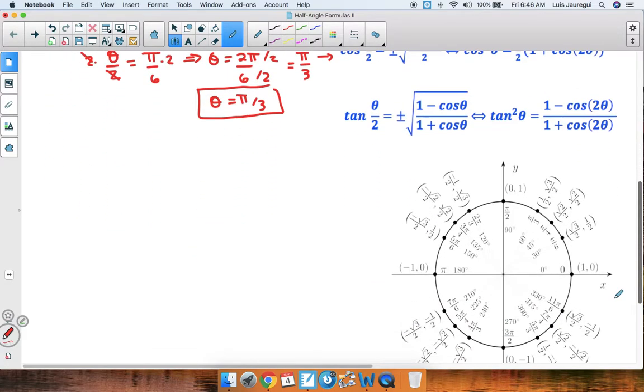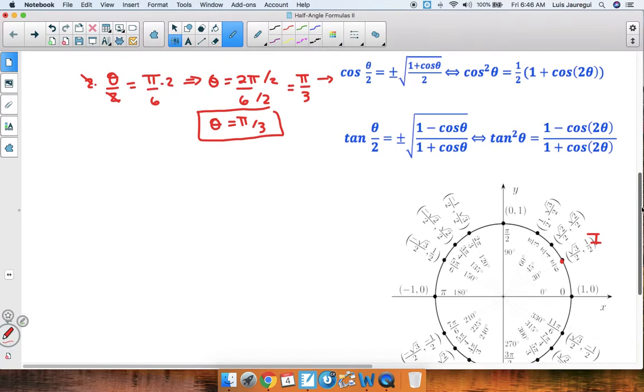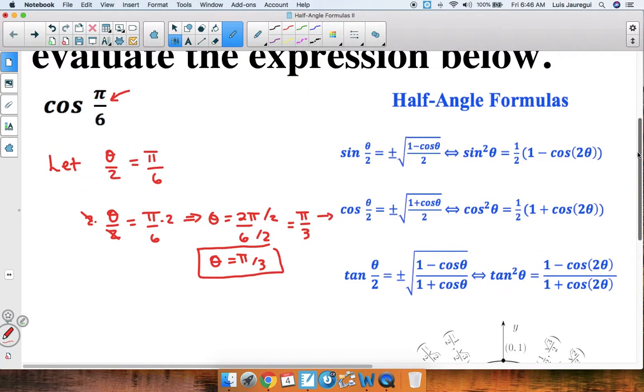By looking at the unit circle, we realize that pi over 6 is on quadrant 1. And since all the trigonometric functions are positive on quadrant 1, we are going to take the positive square root.